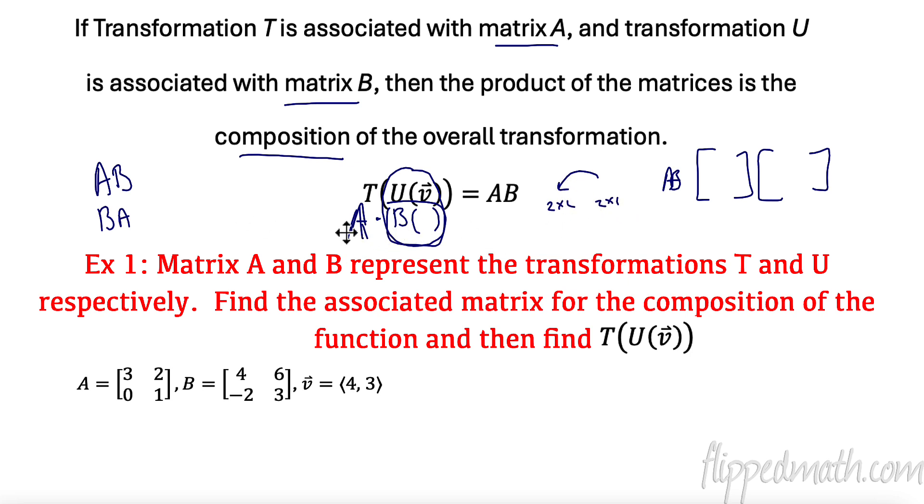So even though I'm doing A times B, A is the matrix that I would apply last, in this case, T. So I'm applying U first. So it would be A times B, and that's going to give me a matrix that is the overall composition. But I have to do it in this order because we always have to put our 2 by 2 first so that the dimensions match.